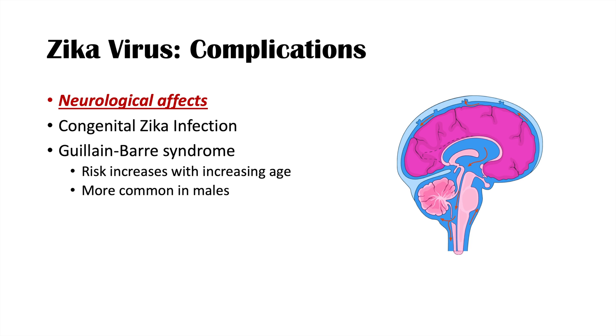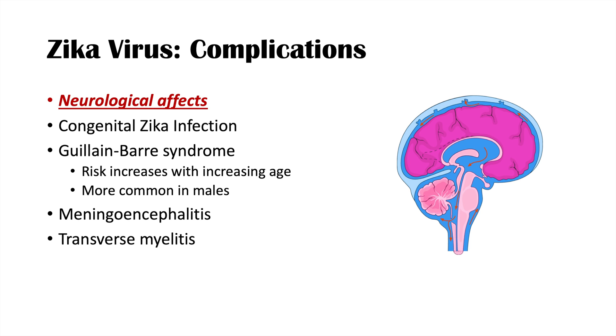Additional neurological complications include meningoencephalitis and transverse myelitis. The major complication to focus on is the congenital Zika virus infection, also called congenital Zika syndrome — the condition responsible for the neurological birth defects seen in infants born to Zika-infected mothers.